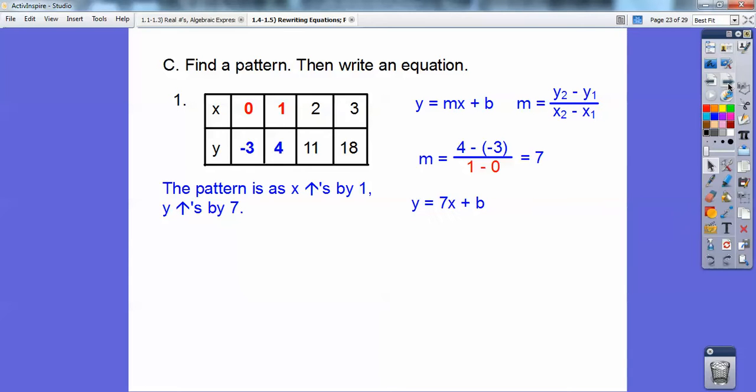And to get b, I can substitute in this x, this y, or this x, this y, or this x, this y, or any one of them. I'm going to choose the one with the 0 because that's nice and easy. When I plugged in that right there, this for x and this for y, then I get -3 = 7 times 0, which is 0. So b = -3.